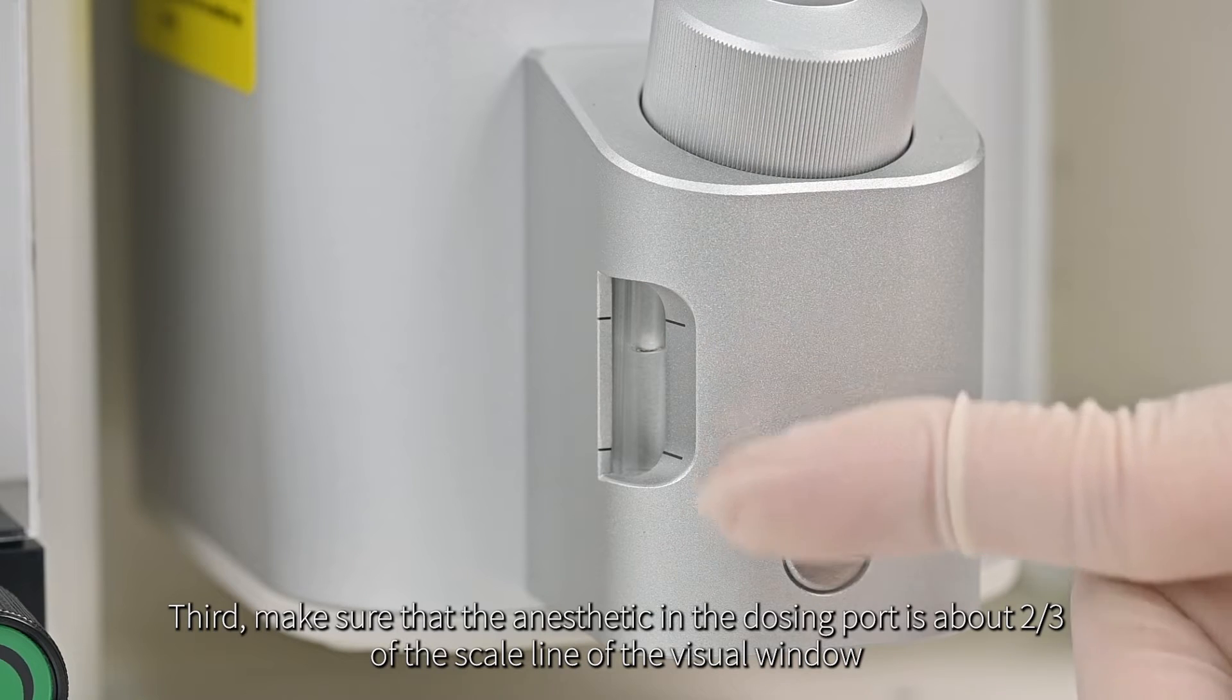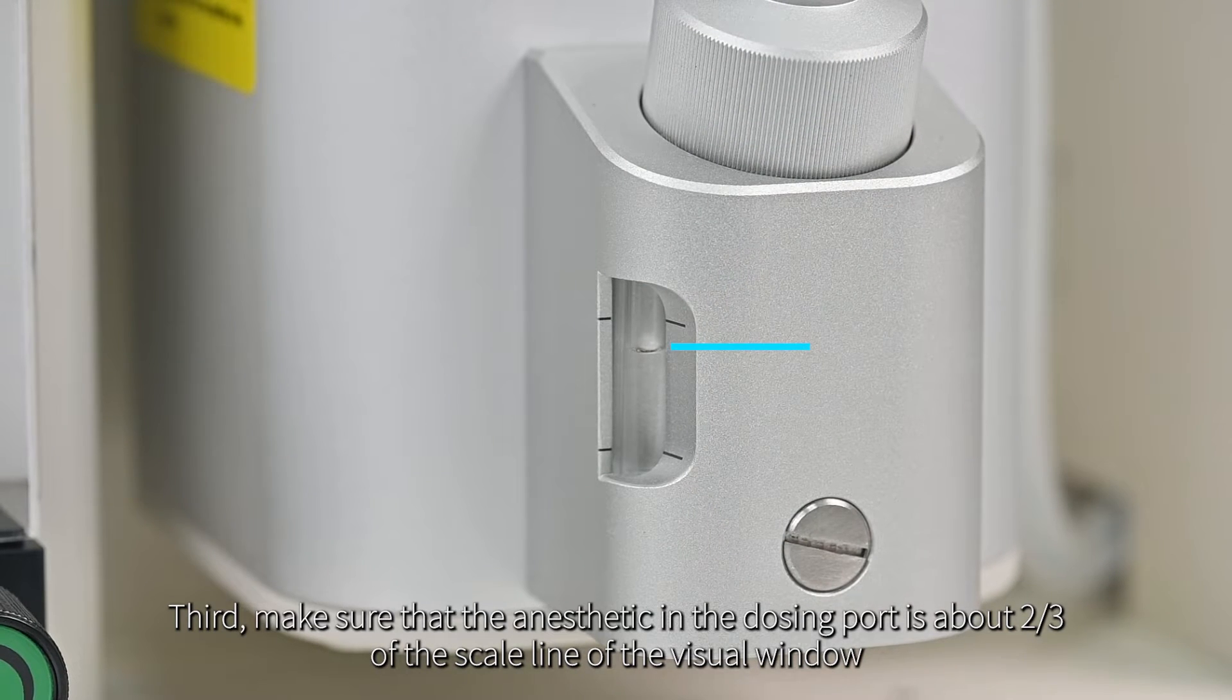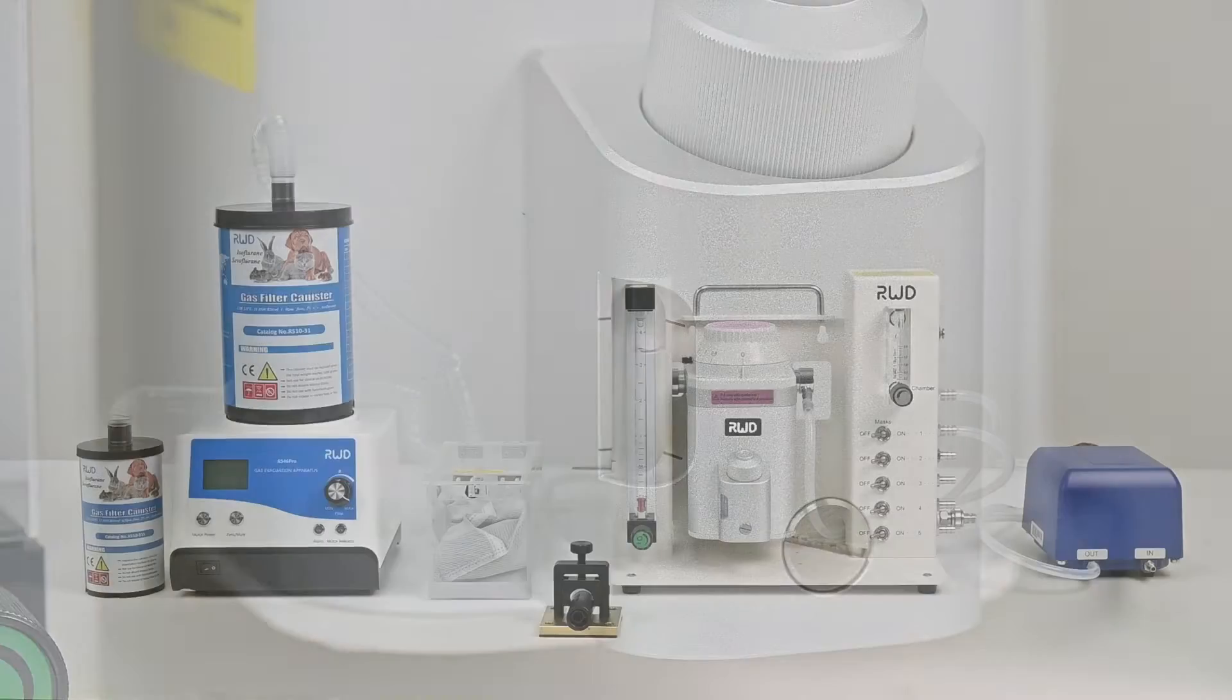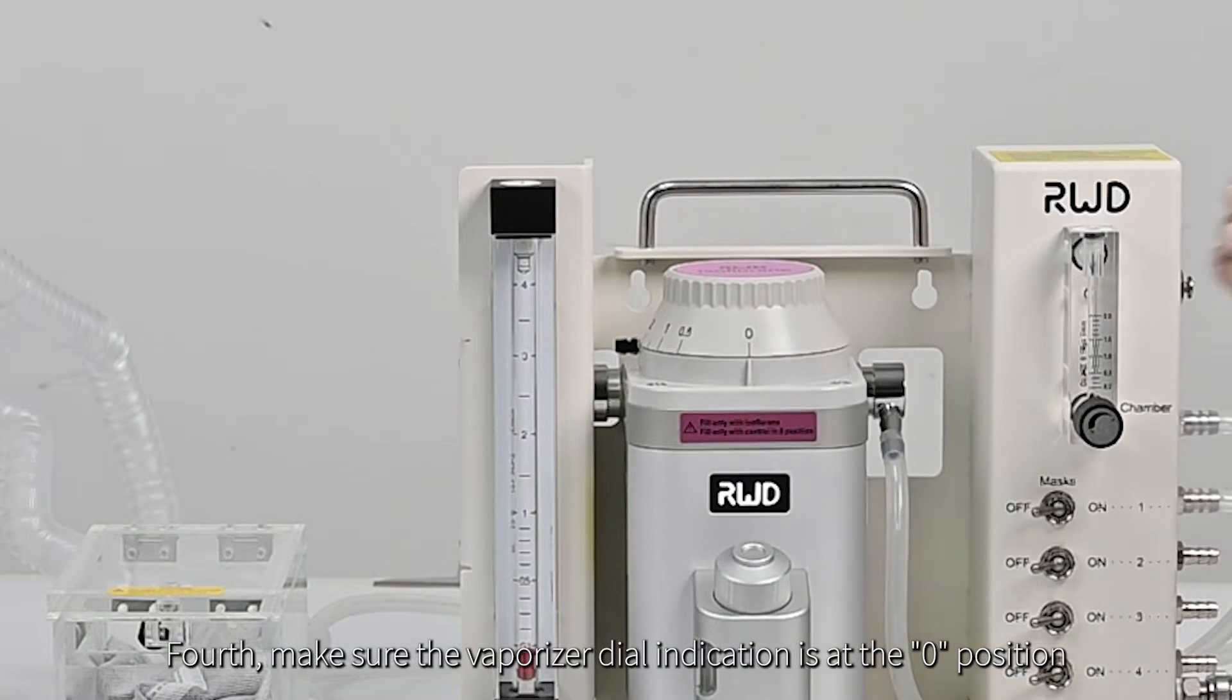Third, make sure that the anesthetic in the dosing port is about two-thirds of the scale line of the visual window before the experiment to avoid the lack of anesthetic causing the animal to wake up. Fourth, make sure the vaporizer dial indication is at the zero position.